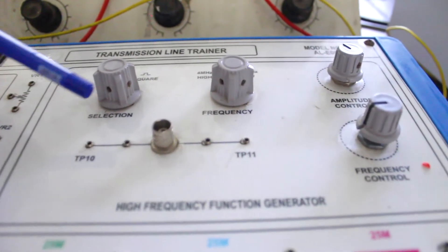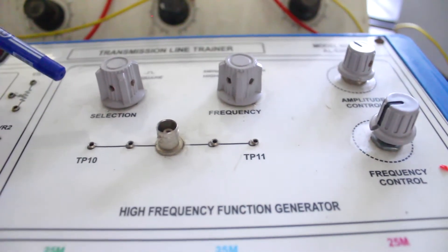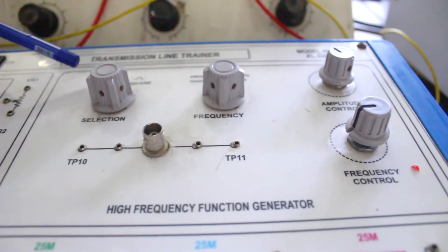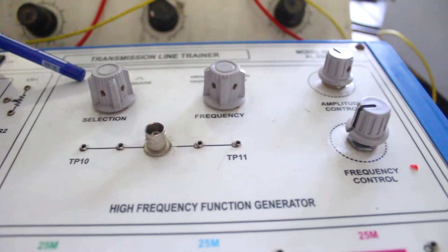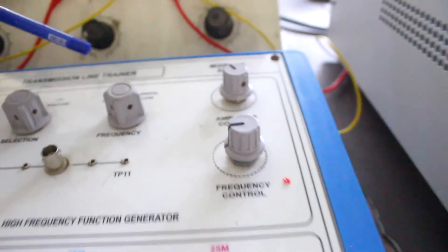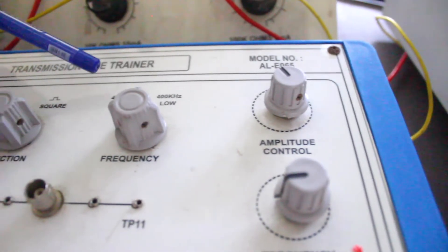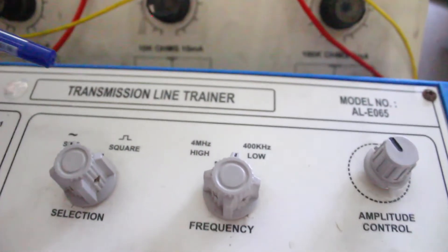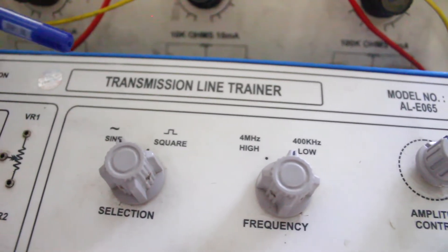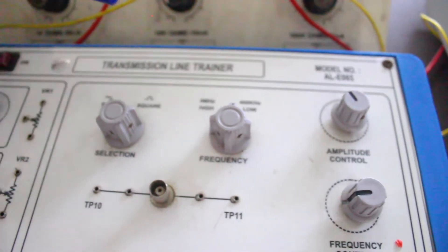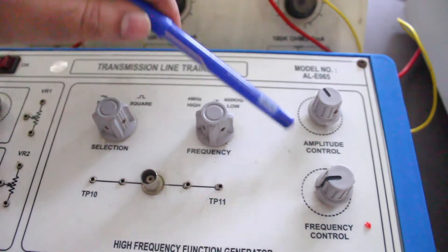We are having two choices of waveform: sine wave as well as square wave. The frequency range available in this kit is 4 megahertz and 400 kilohertz. Basically we are going to use this lower frequency range, 400 kilohertz.